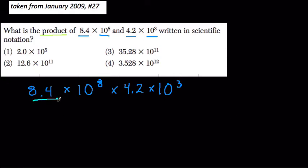So I'm going to say, let's multiply these two numbers first, 8.4 times 4.2. That's going to be one group, and then we have 10 to the 8th and 10 to the 3rd. We're going to multiply those, and this is all tied together by multiplication.